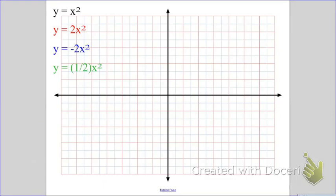0 squared is 0, 1 squared is 1, 2 squared is 4, and 3 squared is 9. Draw that side, and of course you can put your matching points to the other side.